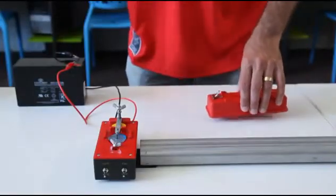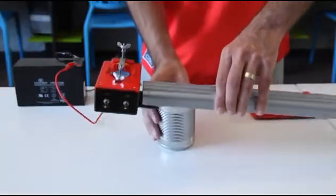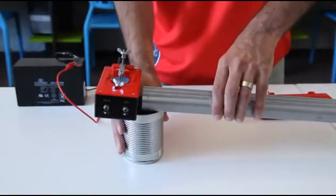Part B. Investigating acceleration. Set up the rail track and ticker timer as before, but this time use a suitable support such as this can to elevate the track at an angle of about 30 degrees.